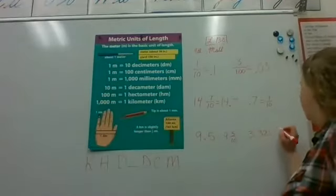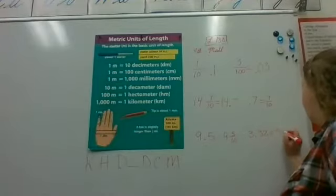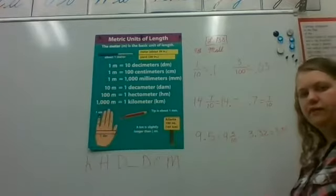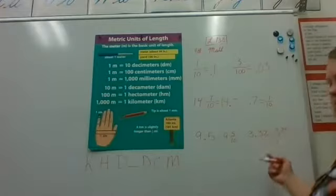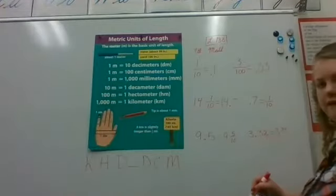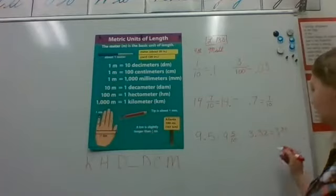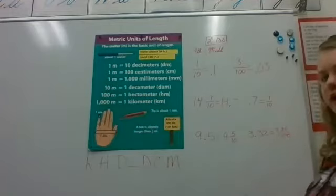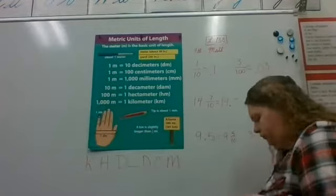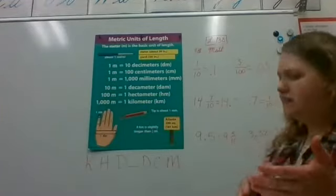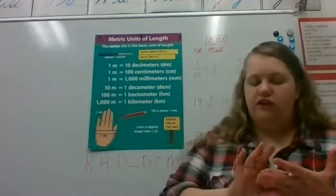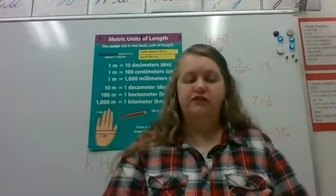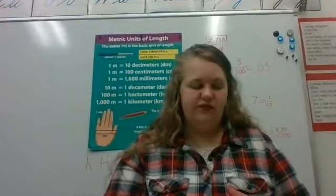If we have a whole number with a decimal like 3.32, we put three as the whole number, 32 on top, and since the two is in the hundredths place, we put 100 on the bottom: three and 32 hundredths. If you're still struggling, have your parents contact me. Go ahead and pause the video to take your speed drill, then we'll jump right into our lesson.